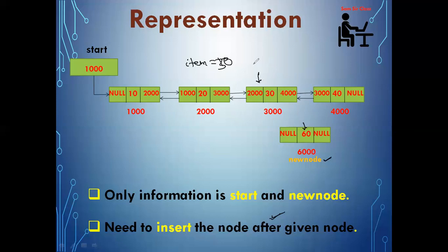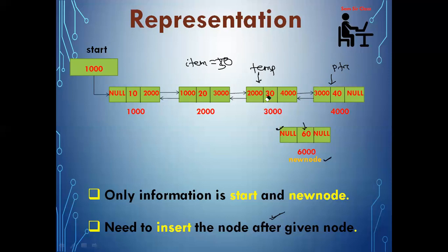If the node is present, then temp will point to it. So I can directly write new_node->next equal to temp->next, meaning I can keep address 4000 there. But since this is a doubly linked list, I need to update 4000's previous part and new node's previous part also. So I'm taking the help of one more pointer — PTR — and PTR equals temp->next. So PTR is now pointing to the next node of temp. Temp is pointing to 3000, PTR is pointing to 4000, and new node is pointing to 6000.